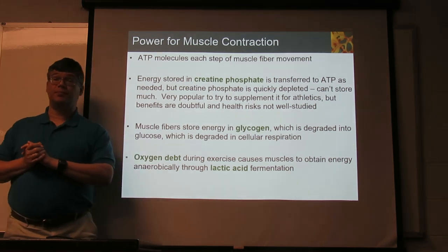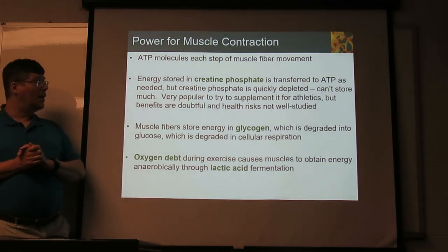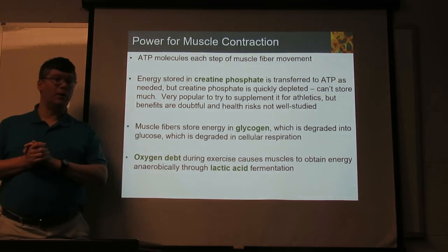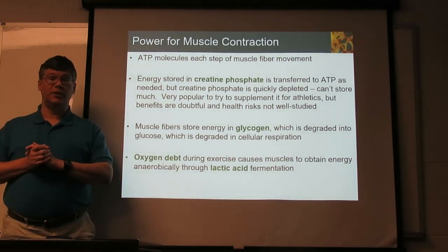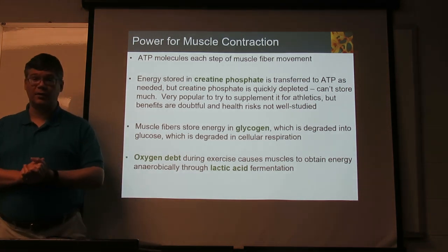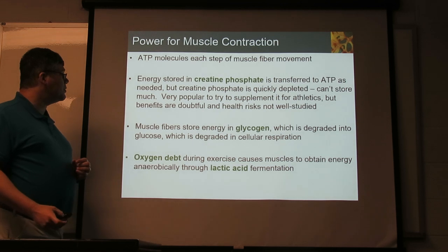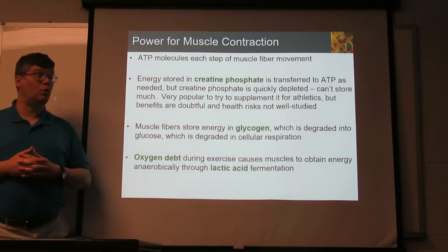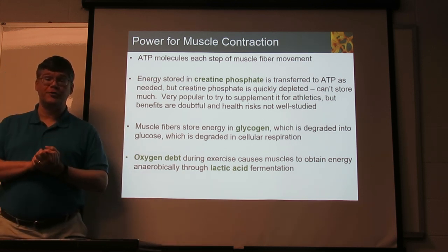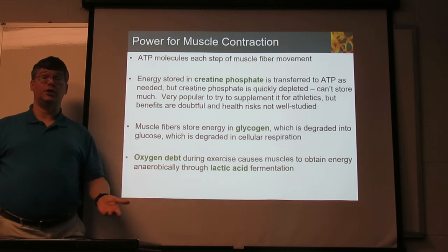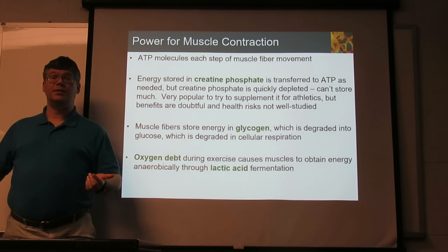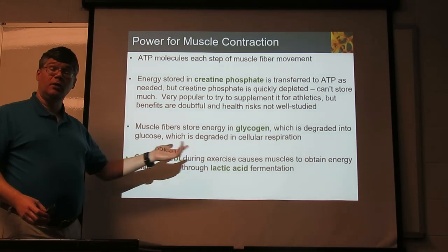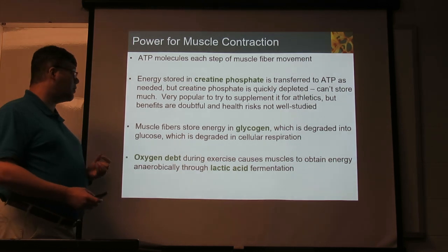Because creatine phosphate is used in muscles, it's been popular as a supplement for athletes. How much it actually does you any good, and what possible risks there might be, are not very well documented. Realistically, it probably does you more good to just do your exercise. Another way muscles can store energy: they can take glucose — those individual simple sugars — and build them up into glycogen, a polysaccharide used for storing energy, kind of like starch in plants. When the muscle needs energy, you can break glycogen down into individual glucoses and use those in cellular respiration.